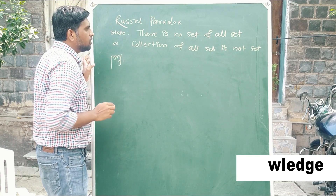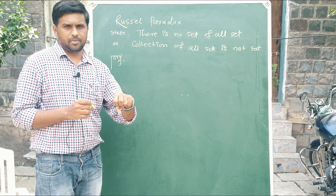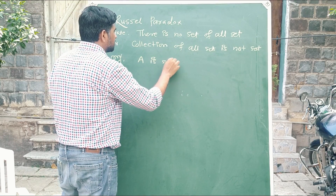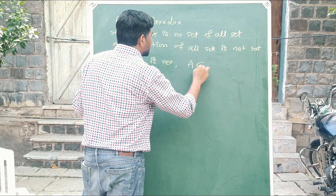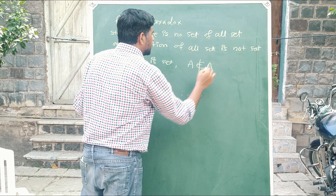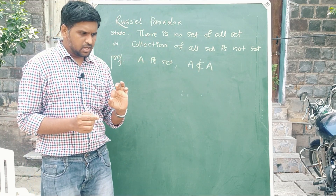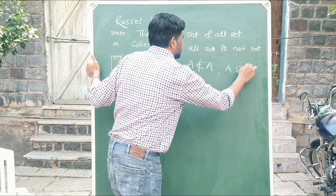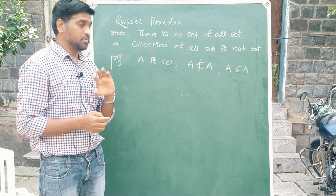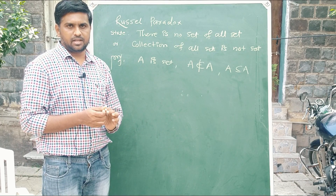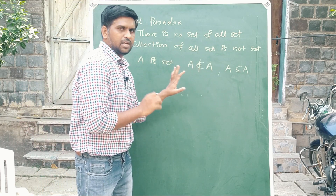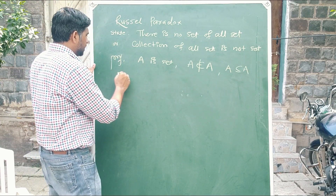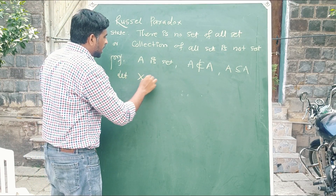First of all, we should know the fundamental property of a set. We know that if A is a set, then A can never belong to A. Every set is a subset of itself, but a set cannot be an element of itself. So A does not belong to A. This is basic information. Now we prove this by contradiction.